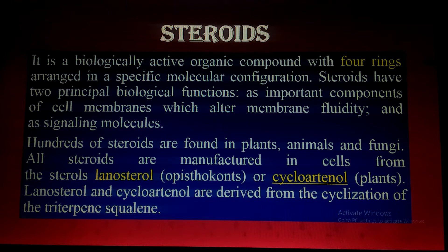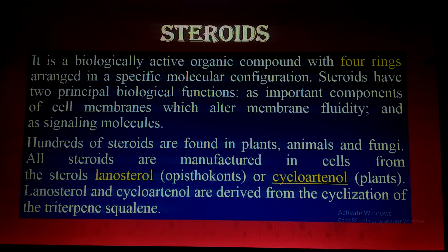The basic structural units of steroids are lanosterol and cycloartenol. Lanosterol is found in animals, while cycloartenol is mostly found in plants. Both lanosterol and cycloartenol are derived from the cyclization of the triterpene squalene. Please watch my lecture on terpenes to better understand this.